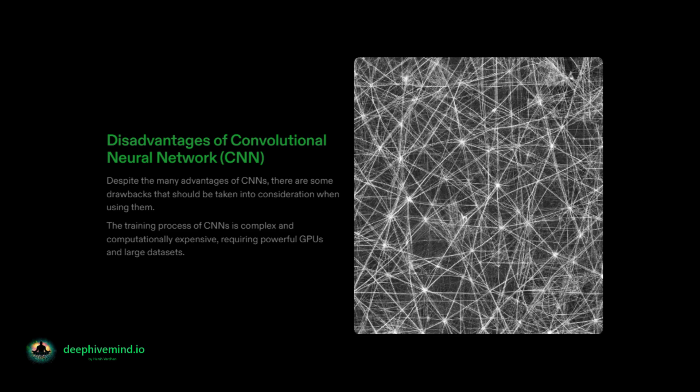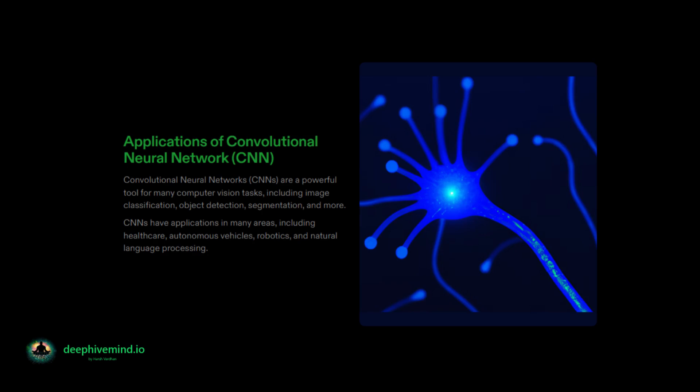However, CNNs also have some disadvantages such as requiring large amounts of data, requiring large amounts of computational power, being prone to overfitting, limited interpretability, and sensitivity to noise and outliers. CNNs have many applications in different fields such as image classification, object detection, semantic segmentation, face recognition, image generation, image captioning, video analysis, self-driving cars, medical imaging, and robotics.